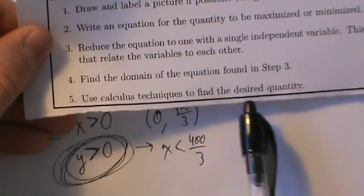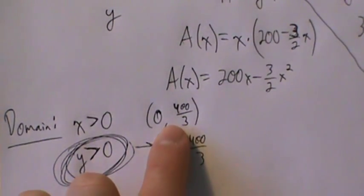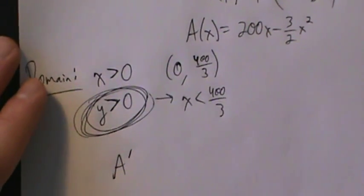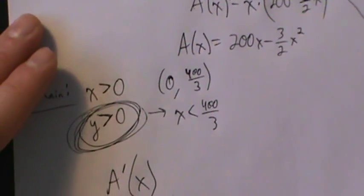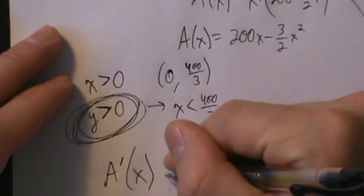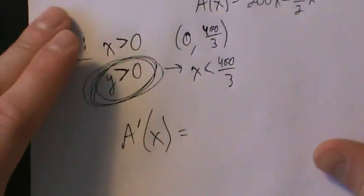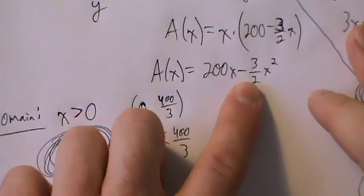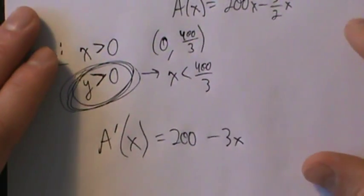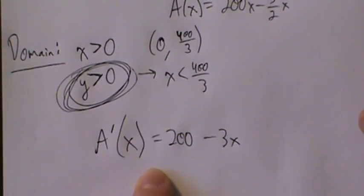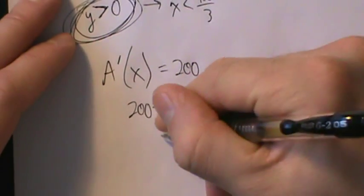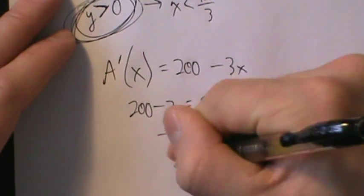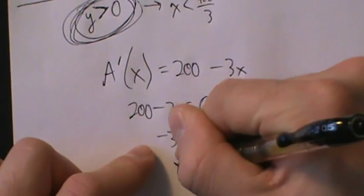Step five: use calculus techniques to find the desired quantity. We need to make sure all critical points are actually in the domain. We find the critical points of A(x) = 200x − (3/2)x². Taking the derivative: A′(x) = 200 − 3x. Setting A′(x) = 0 gives −3x = −200, so x = 200/3. This polynomial is defined everywhere, so x = 200/3 is our only critical point.